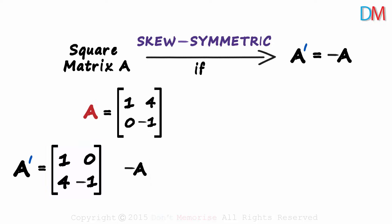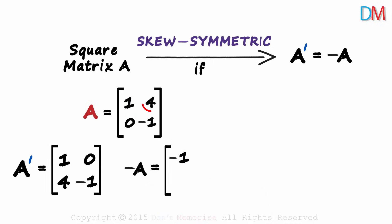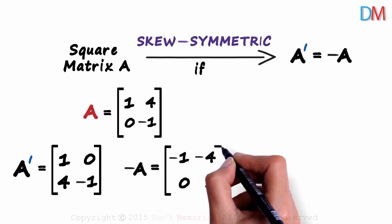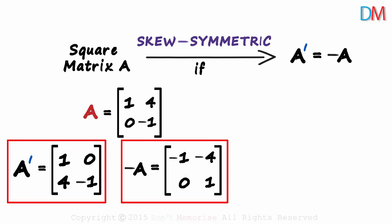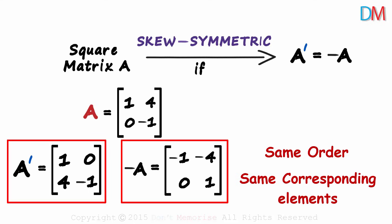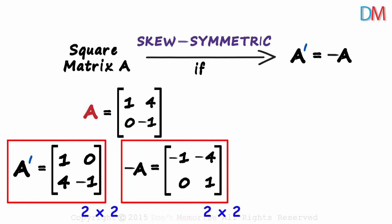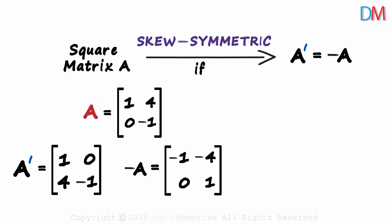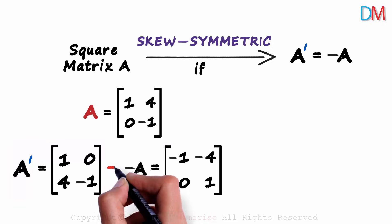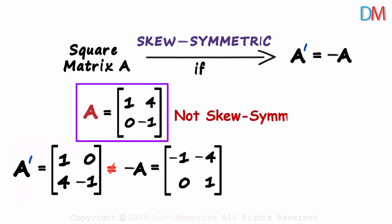For negative A, we negate each element: 1 becomes minus 1, 4 becomes minus 4, negative of 0 is 0, and negative of minus 1 is 1. Are these two matrices equal? For two matrices to be equal, their orders and corresponding elements must be equal. The orders match, but 1 is not equal to minus 1 — so the matrices are not equal. Hence matrix A is not skew symmetric.